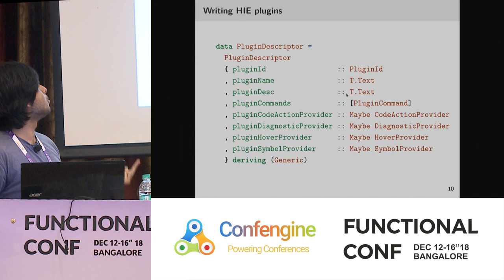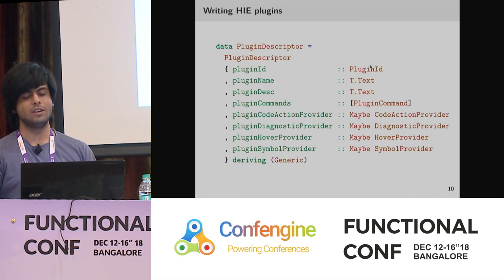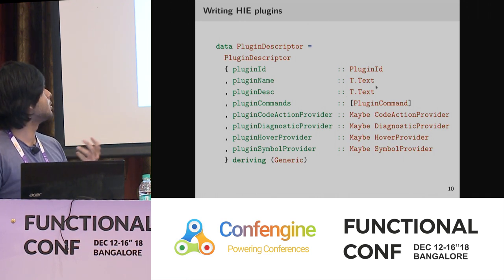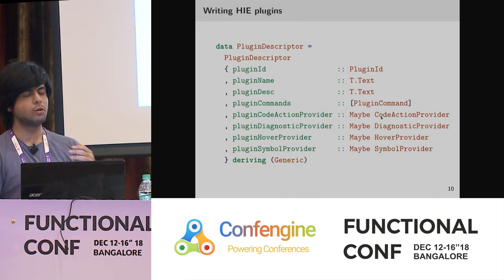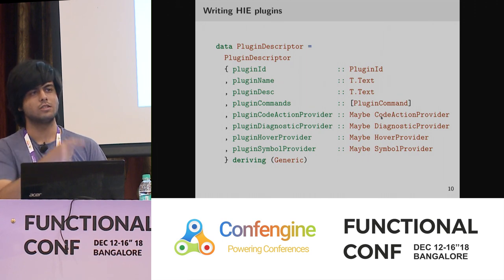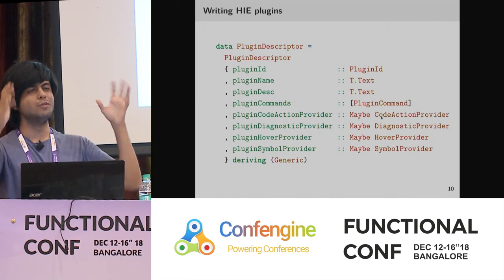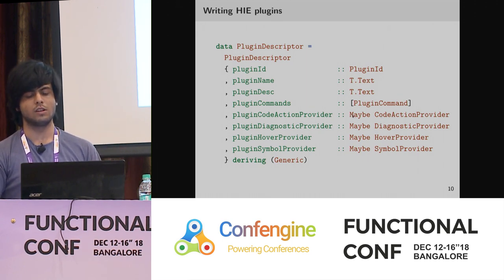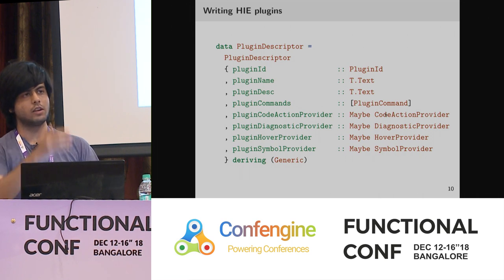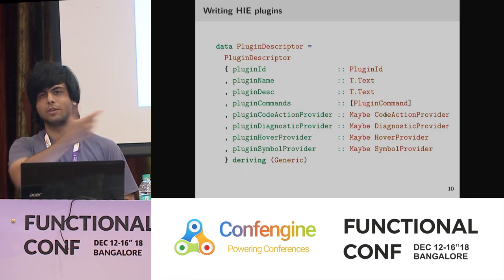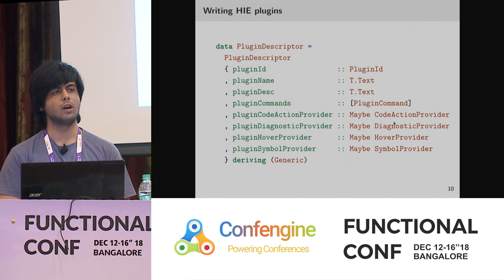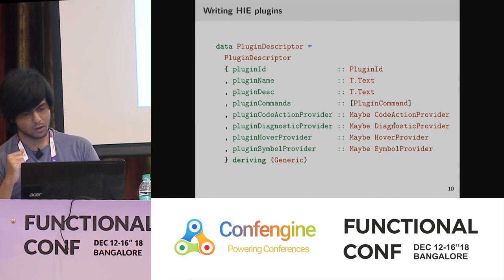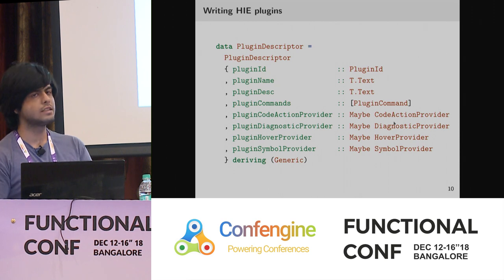Writing a HIE plugin is pretty simple. You just have to populate a data structure where you provide your plugin name, description, and so on. If you want to hook into existing features — like providing code actions such as removing the redundant bracket — you can add something here and it will automatically surface those when the user clicks on those. If you want to provide more kinds of diagnostics or more information when people hover on a symbol, you can easily extend it.